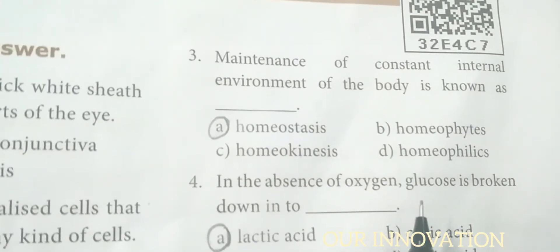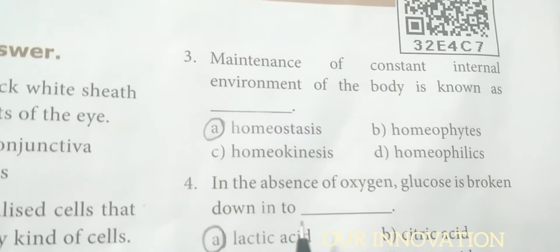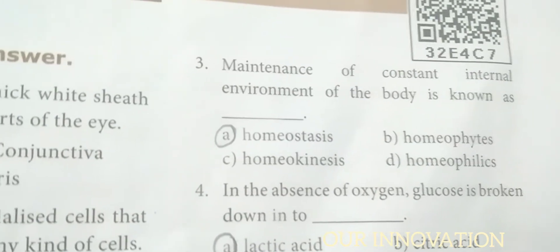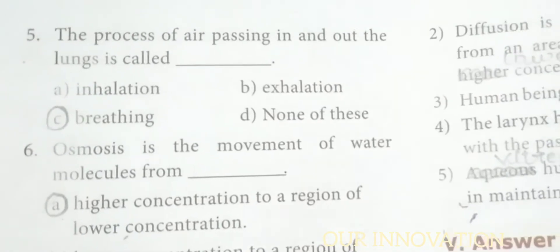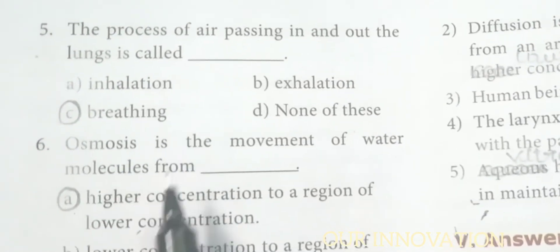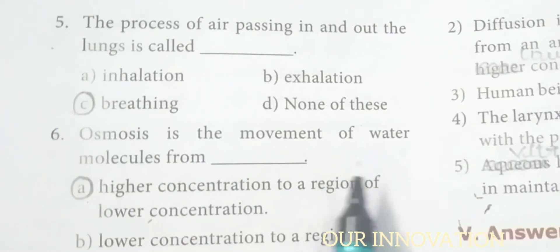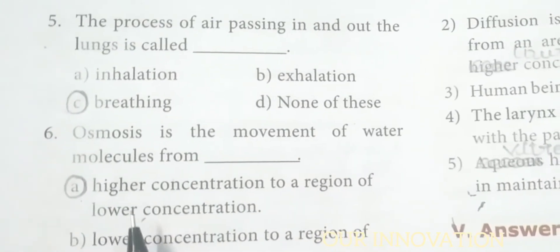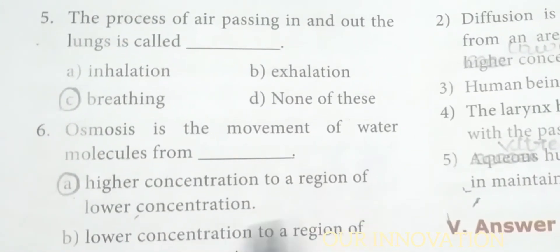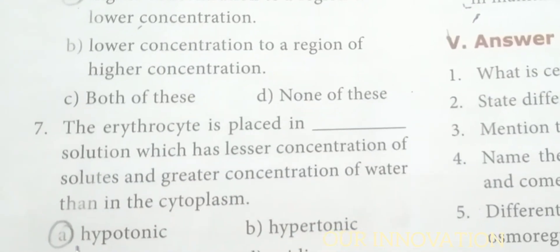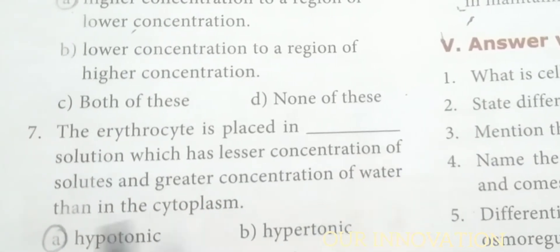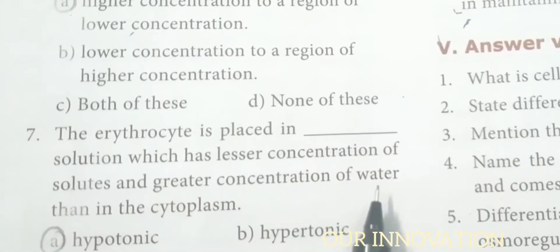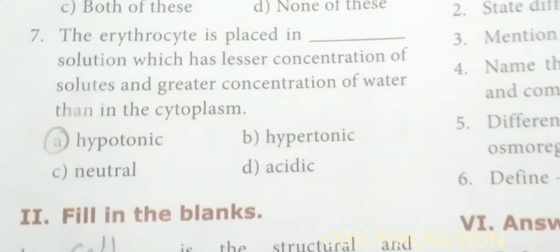In the absence of oxygen, glucose is broken down into lactic acid. The process of air passing in and out of the lungs is called breathing. Osmosis is the movement of water molecules from a region of higher concentration to a region of lower concentration. The erythrocyte is placed in a hypotonic solution, which has lesser concentration of solutes and greater concentration of water than in the cytoplasm.